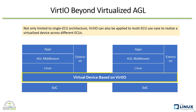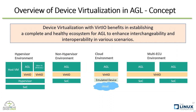That's not all for Virtio — it's not only limited to single ECU architecture. With the well-defined front-back architecture of Virtio, it can also be applied to multi-ECU use cases to realize a virtualized device across different ECUs. From the application point of view, it just utilizes the virtual device without needing to care about the detailed location and logic of physical devices. In general, device virtualization with Virtio benefits in establishing a complete and healthy ecosystem for AGL to enhance interchangeability and interoperability in various scenarios, whether hypervisor environment, non-hypervisor environment, cloud environment, or even multi-ECU environment.